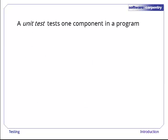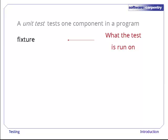Let's start with the simplest kind of testing. A unit test is a test that exercises one component or unit in a program. Every unit test has five parts. The first is the fixture, which is the thing the test is run on, such as the inputs to a function or some data files to be processed.